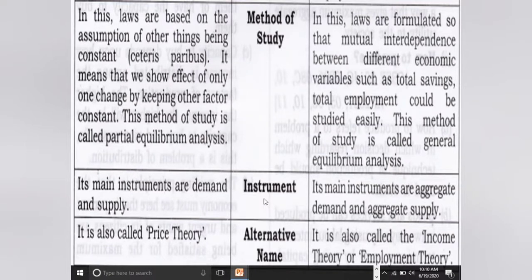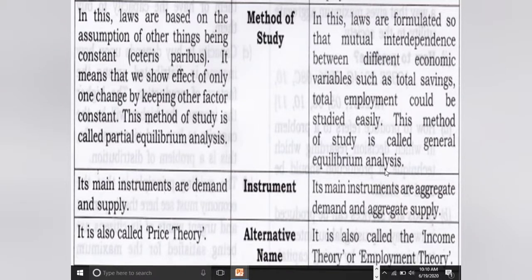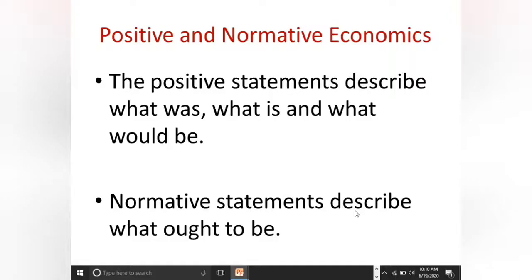Micro economics के instruments हैं: demand and supply — individual demand और individual supply। Macro में instrument हैं: aggregate demand और aggregate supply। Microeconomics का alternative name है 'price theory'। जबकि macroeconomics को 'income theory' और 'employment theory' भी बोला जाता है।